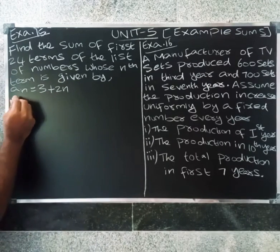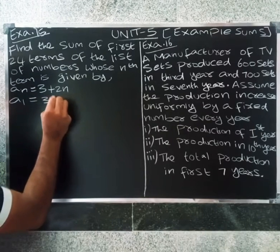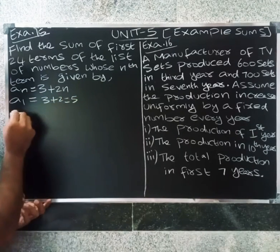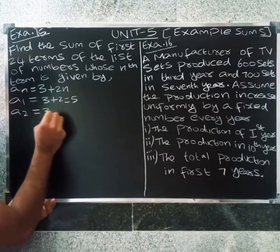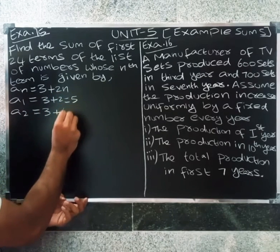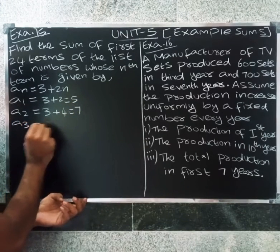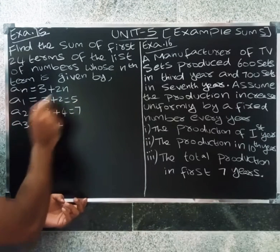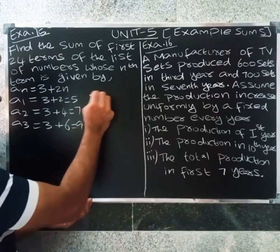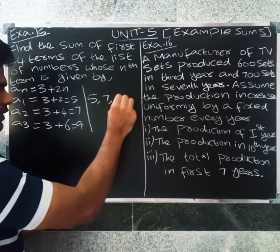First, substituting n equal to 1: a1 equals 3 plus 2 into 1, equal to 5. Next, a2 equal to 3 plus 2 into 2, so 2 into 2 is 4, giving 7. Next, a3 equal to 3 plus 2 into 3 is 6, so a3 equal to 9.